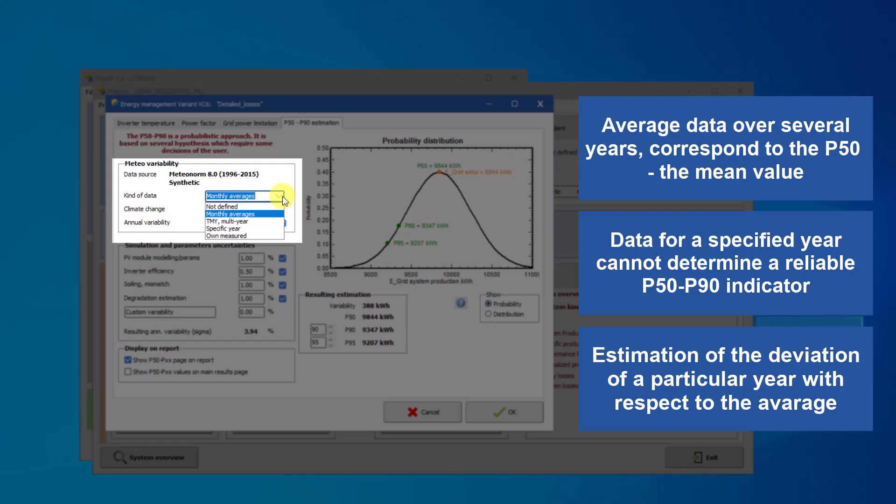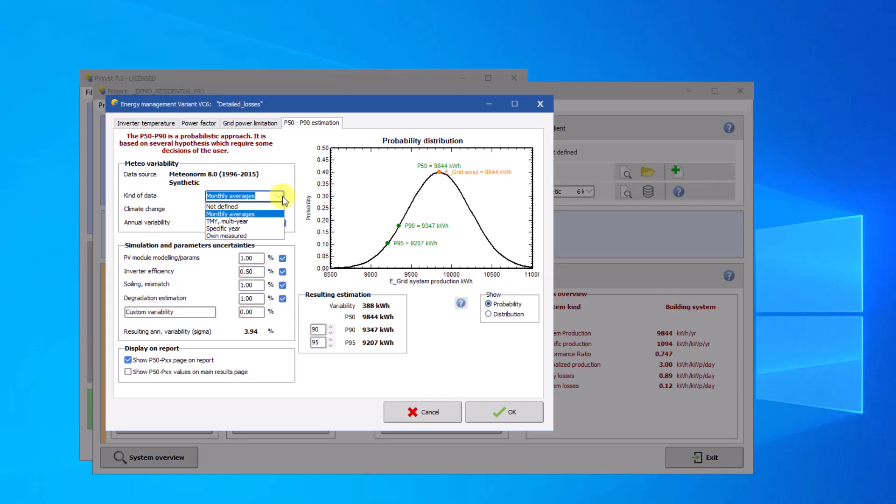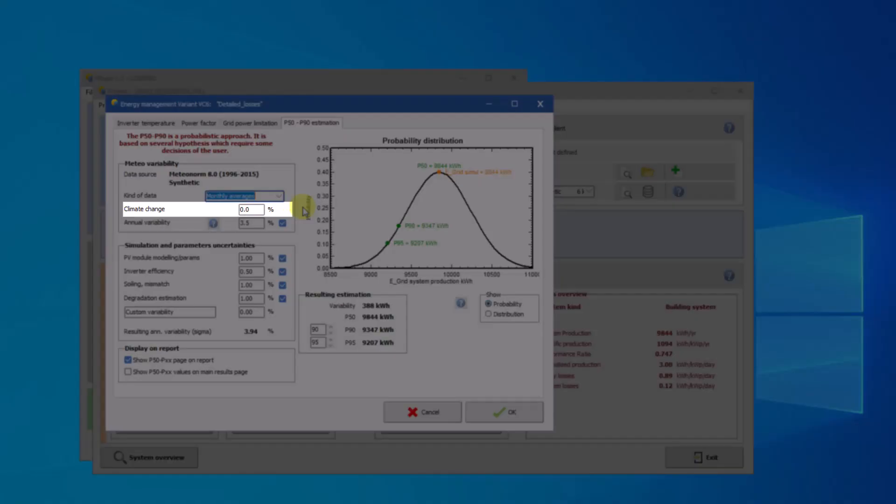Again, this will displace the P50 value with respect to the simulation result. However, PVSyst gives the opportunity of taking a specified climate change into account. This will displace the mean value P50 of the Gaussian with respect to the simulation result.